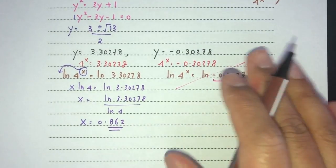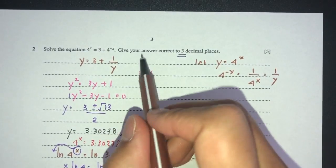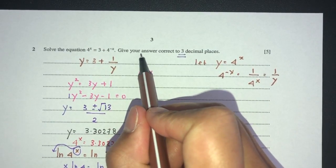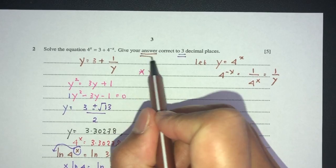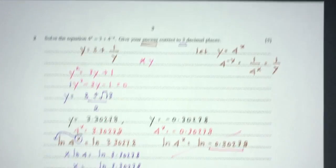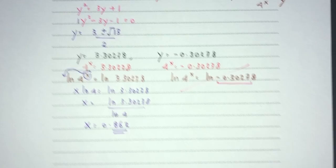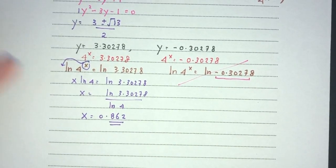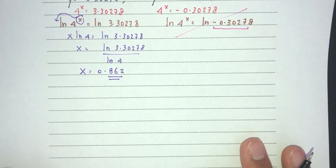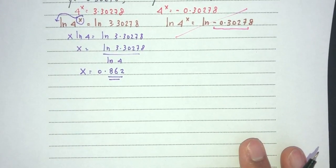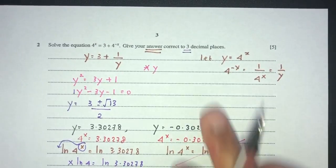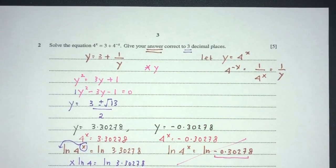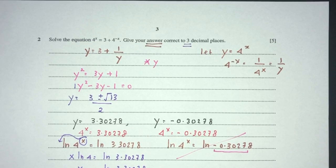Since only one solution is valid, x = 0.862 to 3 decimal places, as required by the question. This completes question number 2.